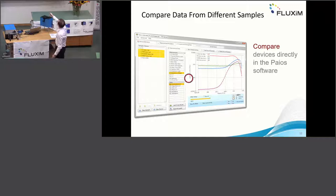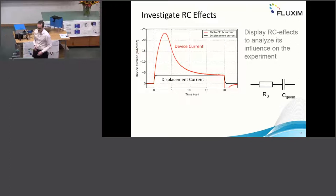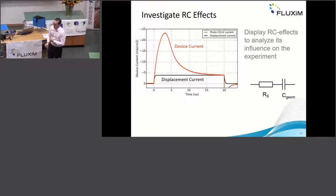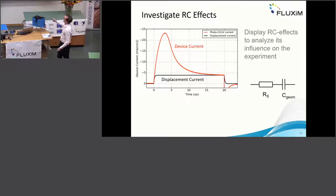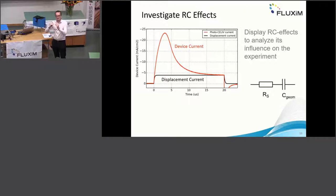We also have extra tools to help analyze measurement results. For example, you can show RC effects — you extract the series resistance R and the capacitance C, and then in a CELIV curve you can show the displacement current. The red curve here is the measurement and the black curve is the displacement current, so you can easily analyze what is displacement current and subtract it from the measured current.